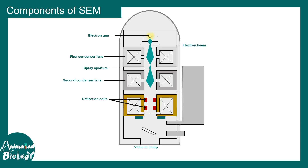The electron beam eventually passes through a deflection coil, which helps in rastering — meaning scanning — the surface topology of the specimen. The objective lenses are shown in yellow. All of these lenses are electromagnetic lenses. To focus an electron beam, electromagnetic lenses must be used. This allows the electron beam to be focused on a narrow volume on the specimen surface and rastered over a desired area.